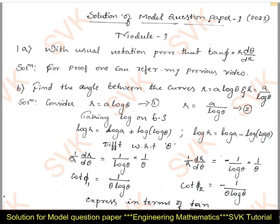Differentiating with respect to θ, we get (1/r)·(dr/dθ). Since r depends on θ, derivative of r with respect to θ is dr/dθ. Derivative of log a is 0. Derivative of log(log θ) is (1/log θ)·(1/θ). We know that (1/r)·(dr/dθ) can be written as cot φ. So for the first curve, cot φ₁ = 1/(θ·log θ).